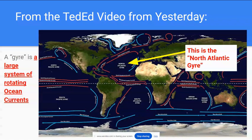Then we learned about the term gyre. Let's take a look at what's happening in the North Atlantic. You'll see the warm water along the equator moving from east to west.